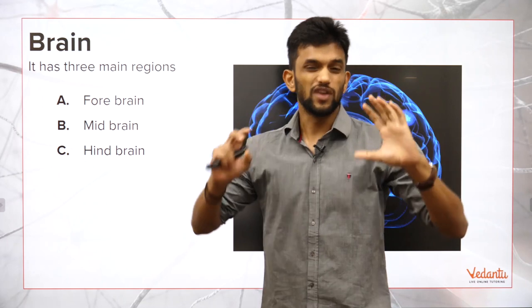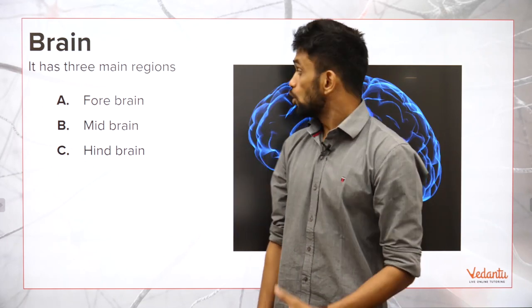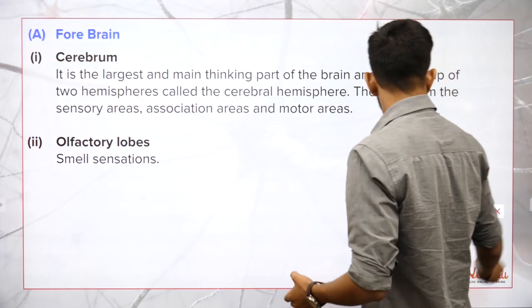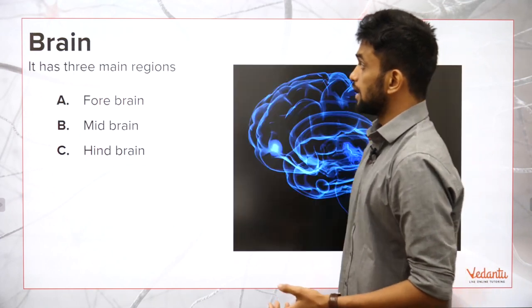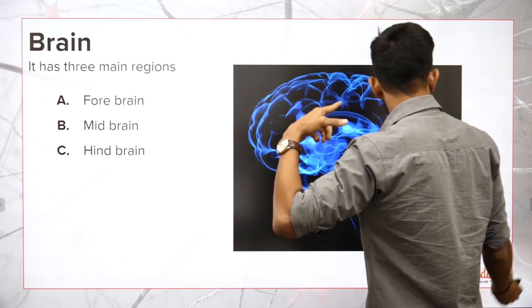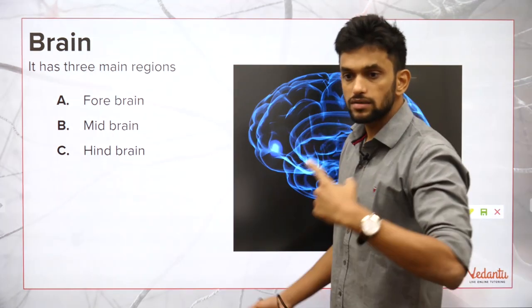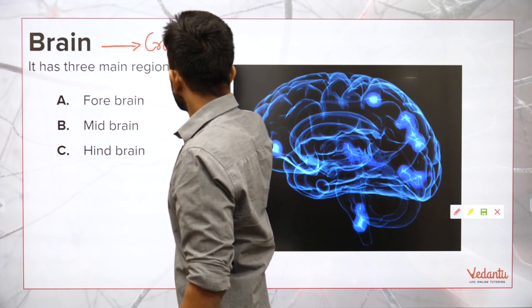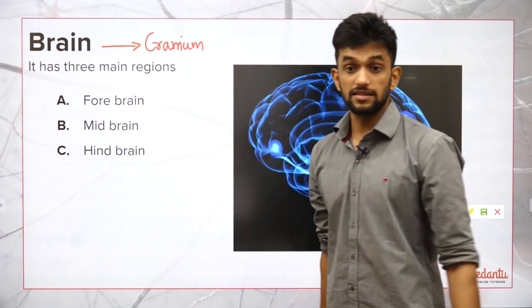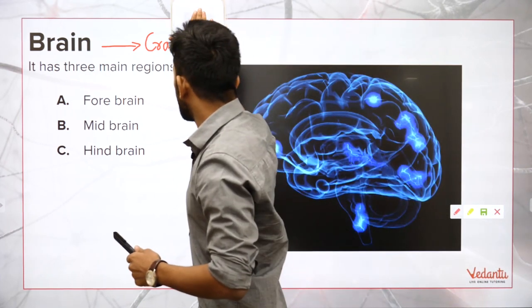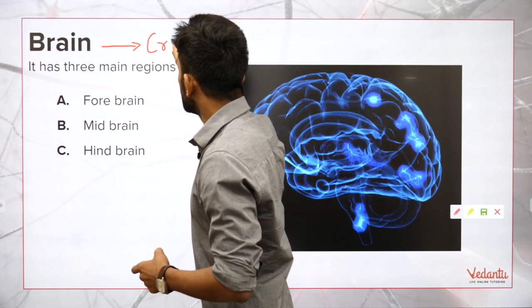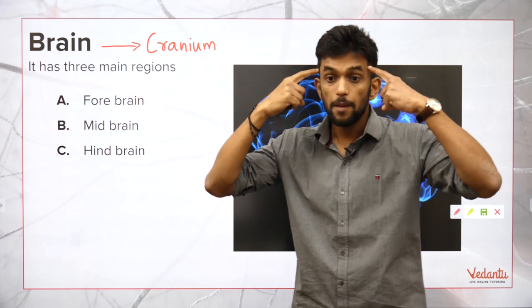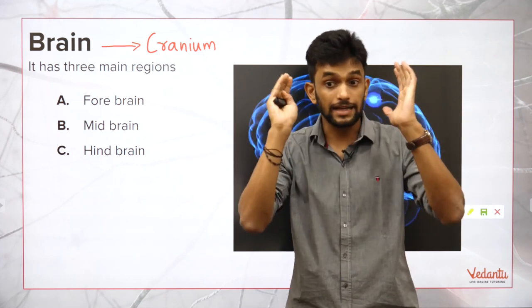Today we are going to study the structure of the brain. So where is our brain present? The brain is present in a bony box called the cranium.